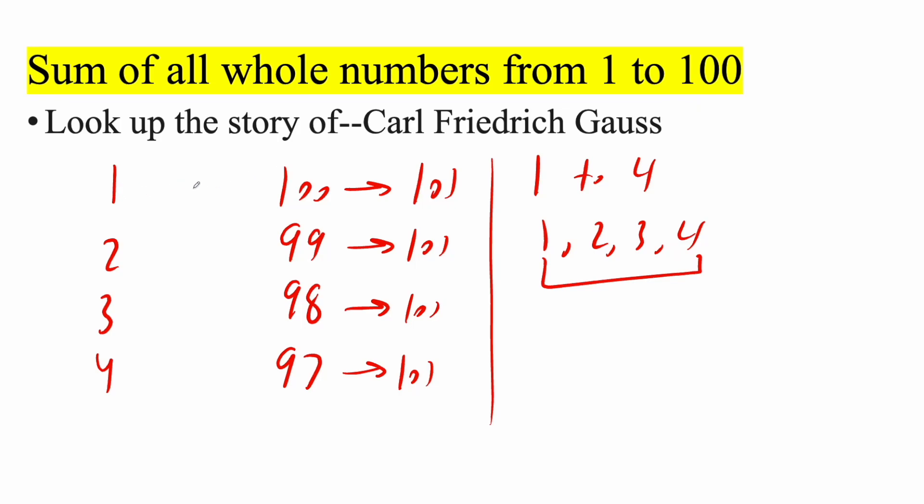And we're doing it in pairs. So 1, 100, 2, 99. So really we have 50 pairs. And each pair is giving us 101. So we get 101 times 50 pairs.